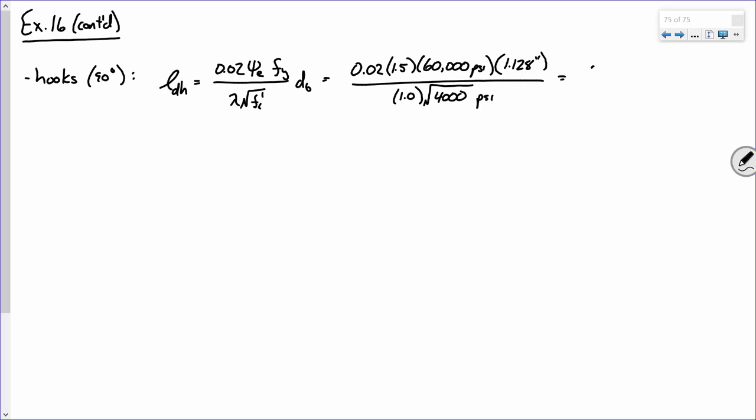Which is 0.02 times, what's our epoxy factor? 1.5. What do I use for FY? 60,000. Times 1.128. And what do we get? 32.1. Anybody else get that? All right. So, to answer Mr. Eukonek's question a while back about can't you just bend the bars and reduce your development length, the answer is yes. I mean, look what happened. By just taking the bars and bending them, you went from 68 inches to 32 inches.